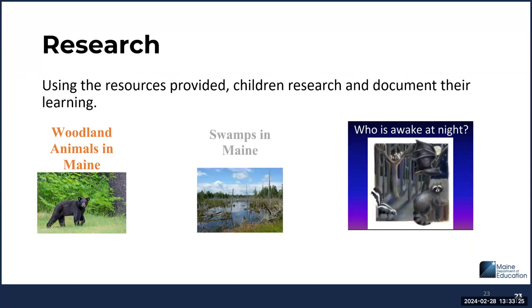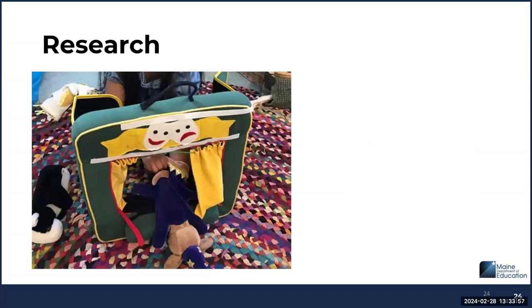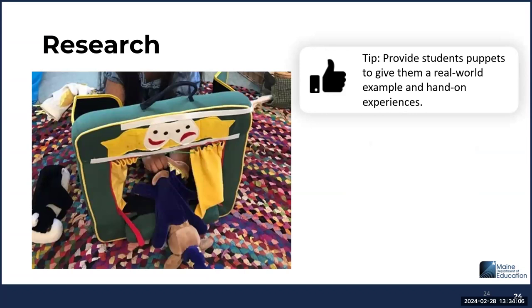Using resources provided in the Pre-K For Me documents, as well as any other resources you may have, children will research and document their findings. Connections will be made to Play With Me, Raccoon on His Own, and Kitten's First Full Moon. Compare the illustrations from core read-aloud books to the non-fiction resources. Some of the Pre-K For Me resources include Woodland Animals in Maine, Swamps in Maine, and Who is Awake at Night. A resource tip: try to provide students with real puppets to give them a real-world example and hands-on experiences.